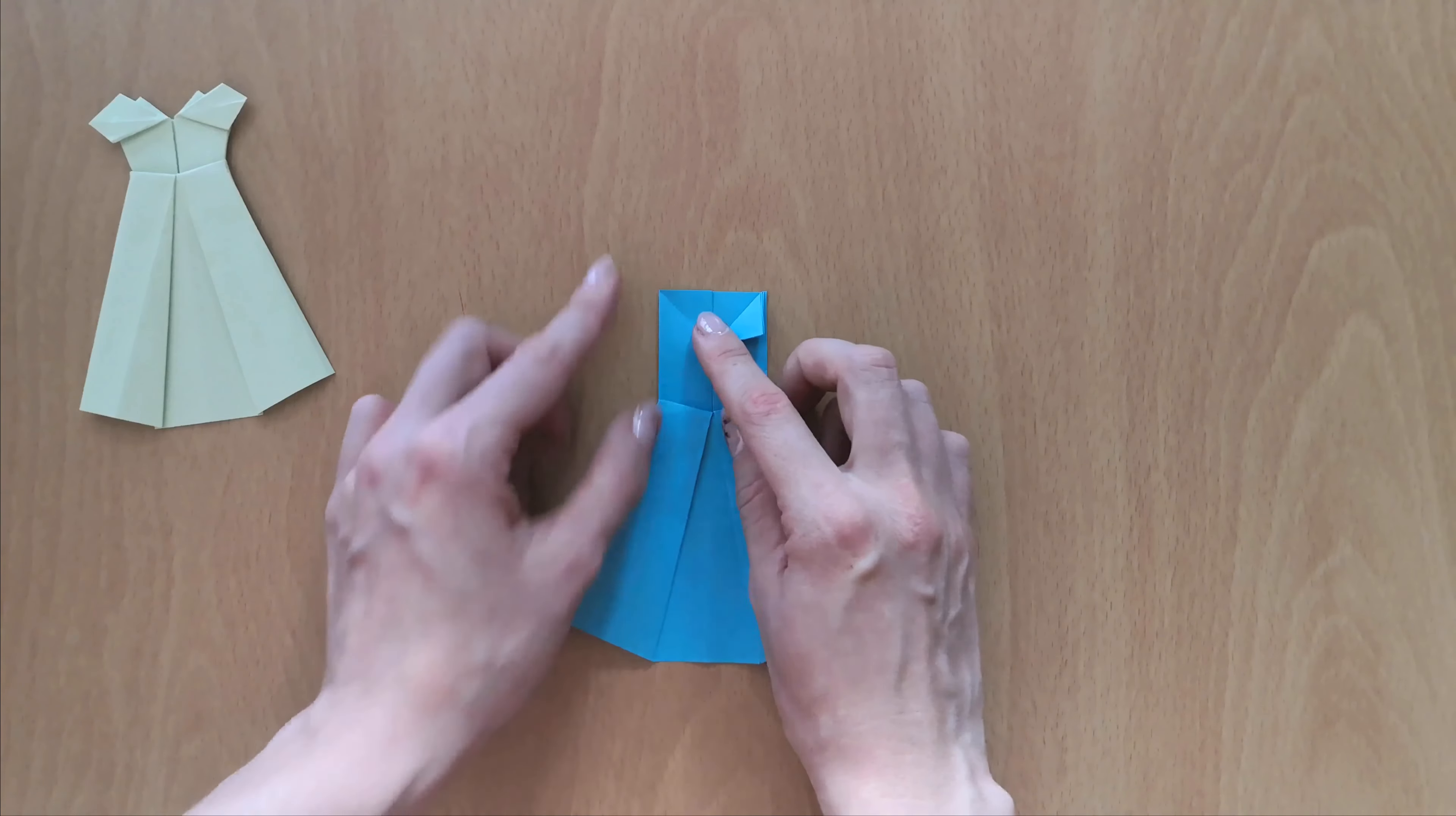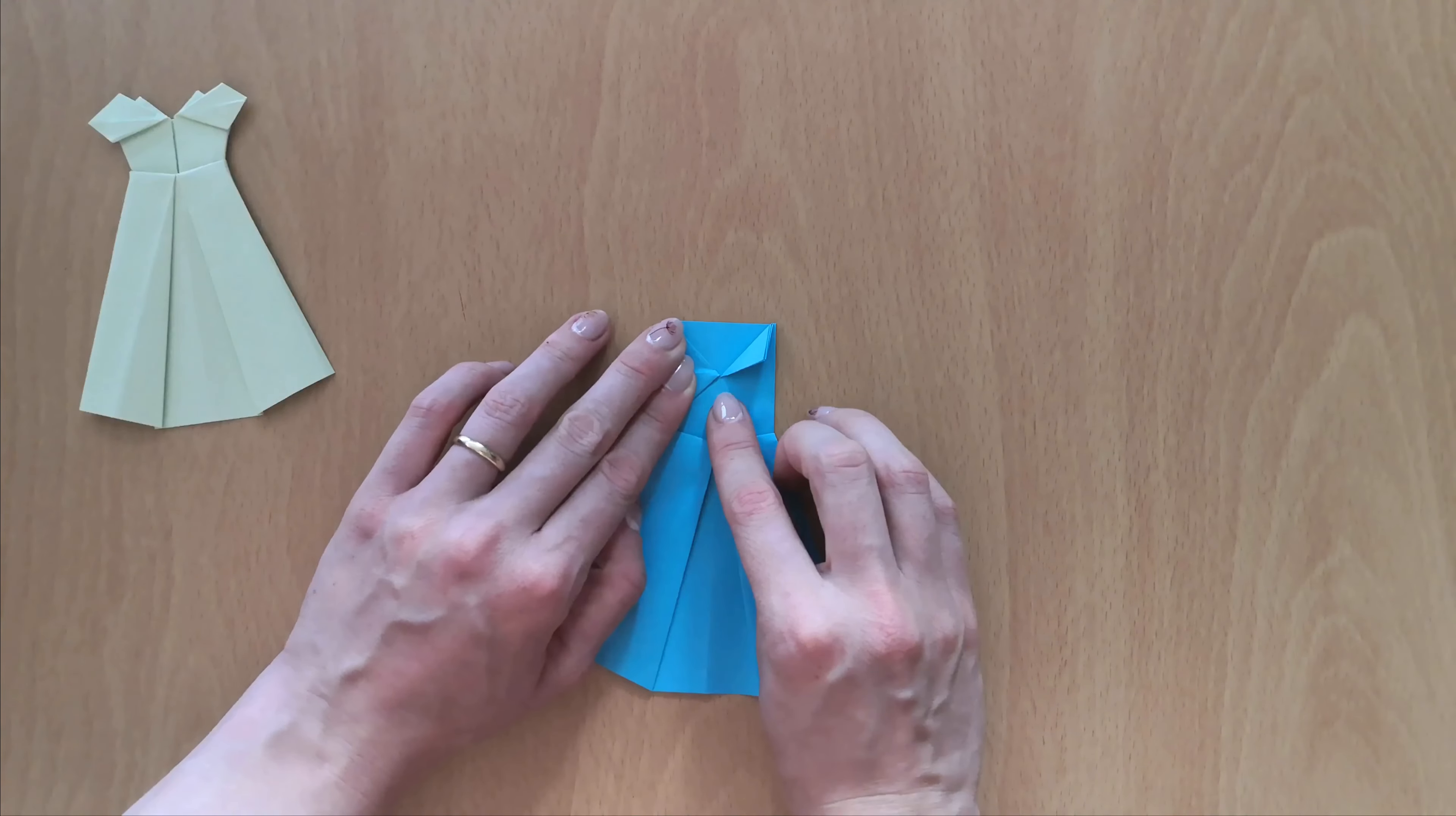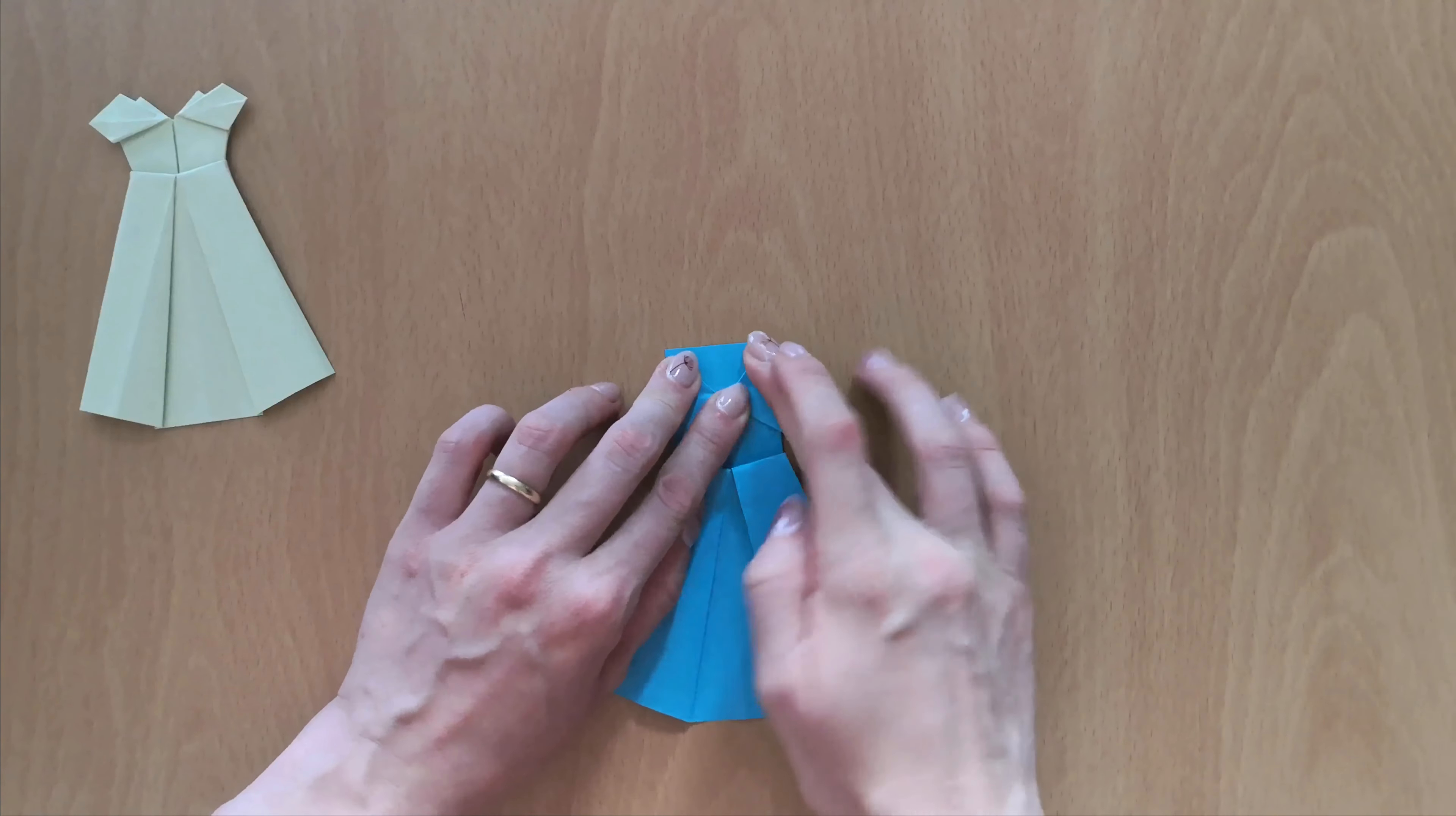And next step, you will unfold it. Take the upper layer and just press it in so that it reverse folds. And you already have the existing lines to do this. So I will show you once more, but slowly. Take the upper layer, open it, press this middle part of it downwards, pinch it on the existing lines and close it together. And then just open it like so.